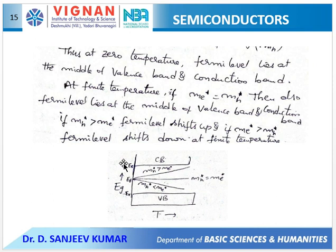In the usual case when the effective mass of the hole is more, as a function of temperature the Fermi level is shifting up. What does it mean? Fermi level shifting up means the maximum energy level an electron can reach is becoming higher and higher with increasing temperature.